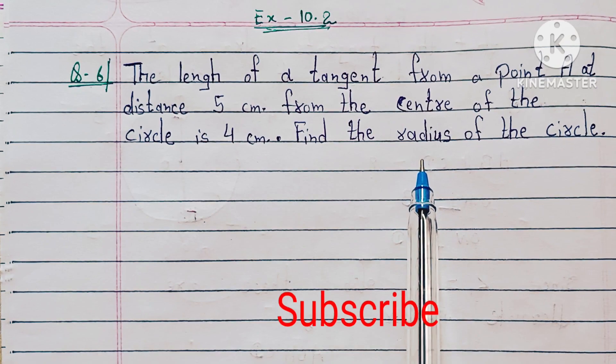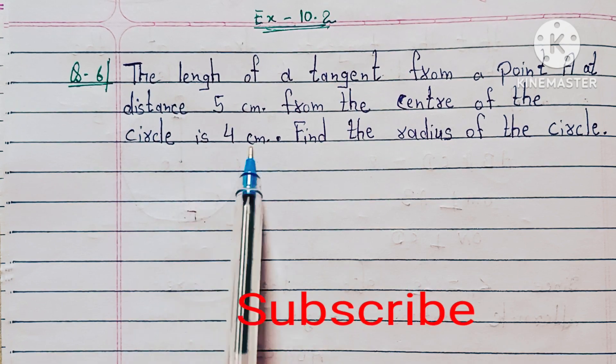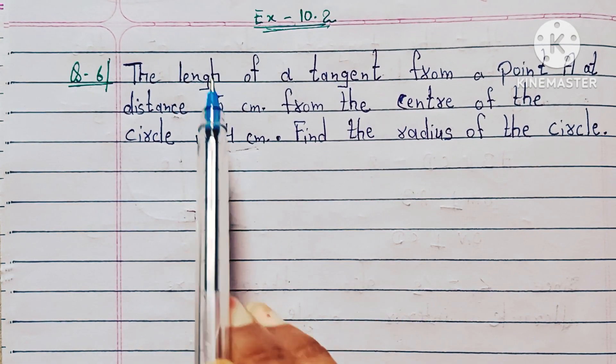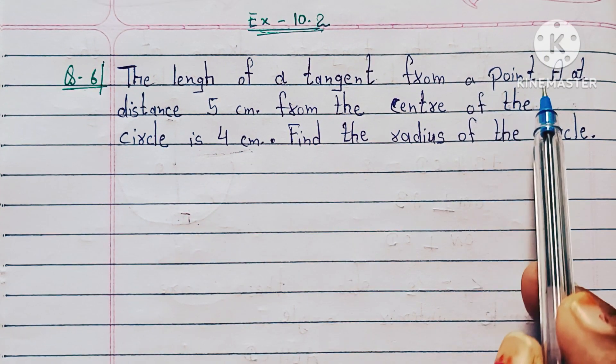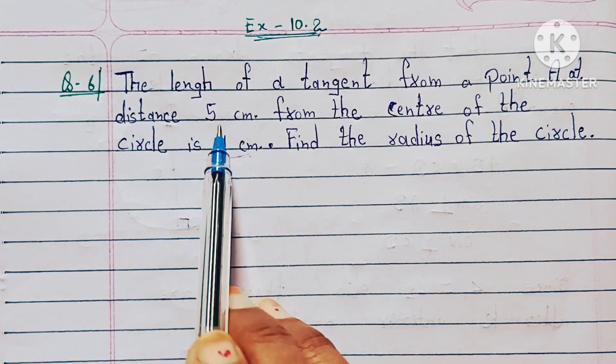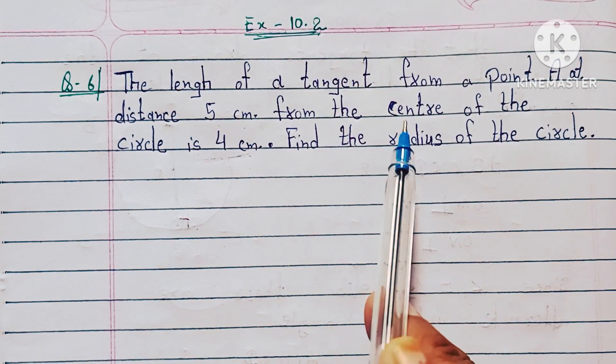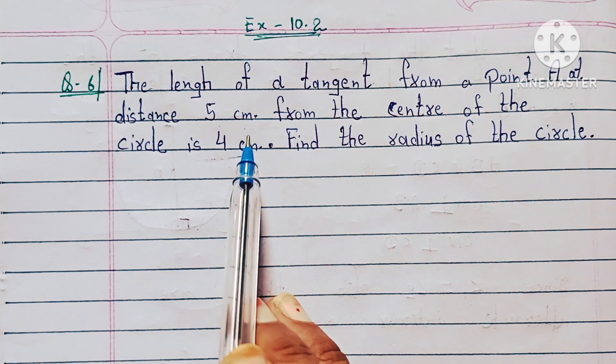Circle ki radius find karna hai. The length of tangent is 4 cm, means tangent ki length hai 4 cm. And point A means koi point A se distance 5 cm from the center, means center se is point A ki distance kitni hai 5 cm.